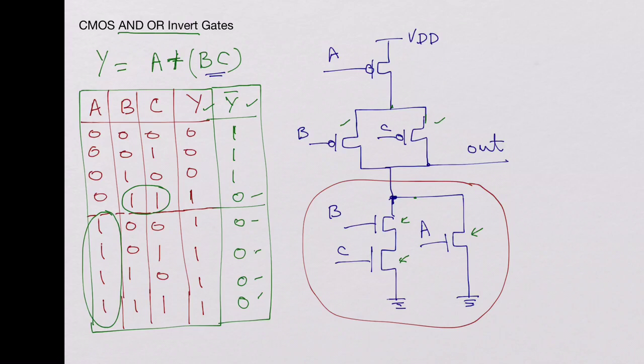And so you have a path to here. And if A is also low, the output will be VDD because these are ON. So you got this.